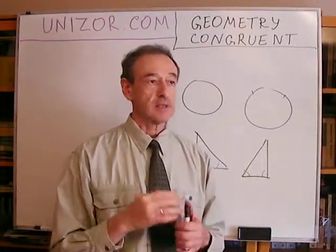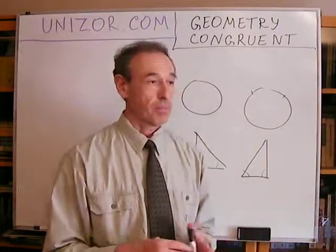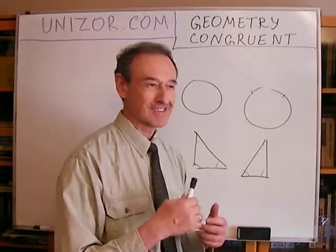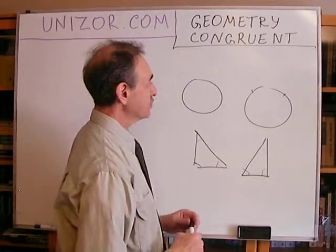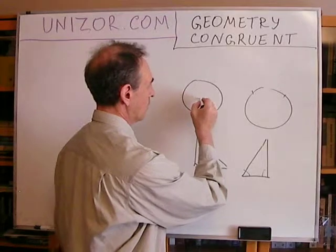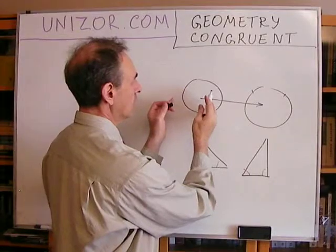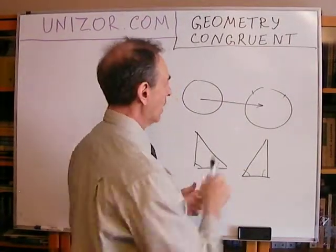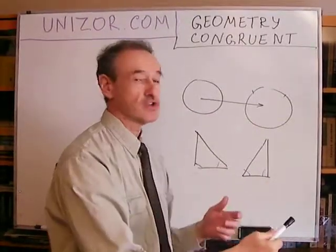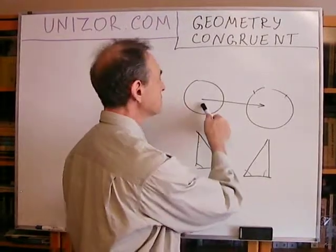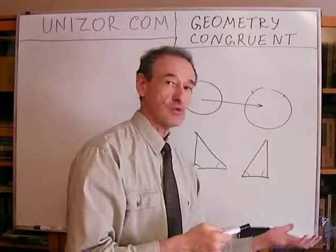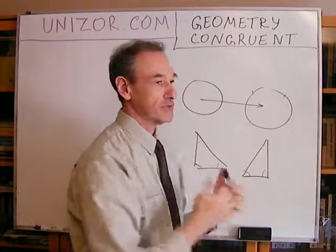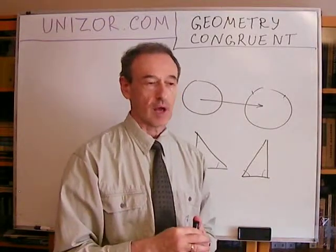Let's consider what kinds of non-deforming transformations we can come up with. The first non-deforming transformation is obviously a plane shift — a shift on the plane. The shift is basically when you shift all points of one geometrical object in one particular direction to another location. After that shift, if they coincide — meaning all the points one object takes belong to another object as well and vice versa — this coinciding after the shift means that two different objects are congruent.